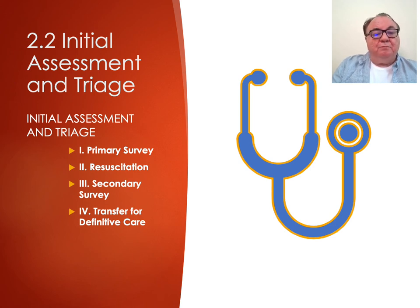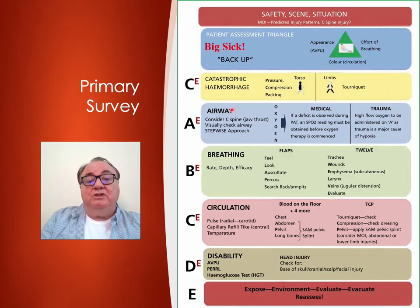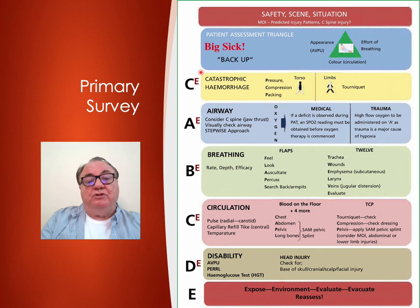The initial assessment involves four stages: primary survey, resuscitation, secondary survey, and transfer for definitive care. The classic management of the trauma patient is ABCDE — airway, breathing, circulation, disability, and exposure. That is still true, but we now talk about C-ABCDE, with C being for catastrophic hemorrhage. If there is catastrophic hemorrhage, that must be stopped before one goes on to ABCDE.